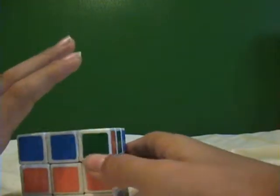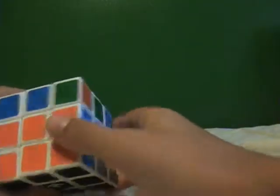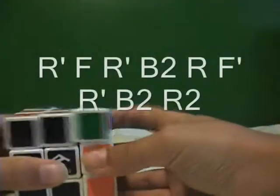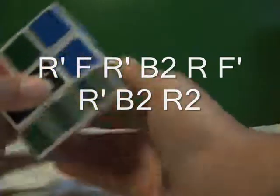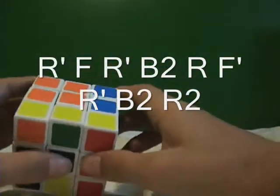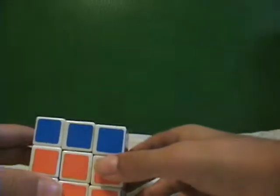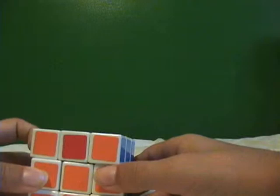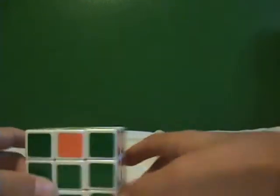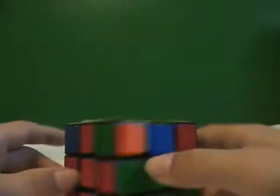Okay, so if you have this, you put the two in the back and then you do this algorithm: R' F R' B2 R F' R' B2 R2, and then you do a U prime, and then you'll have your four corners solved.